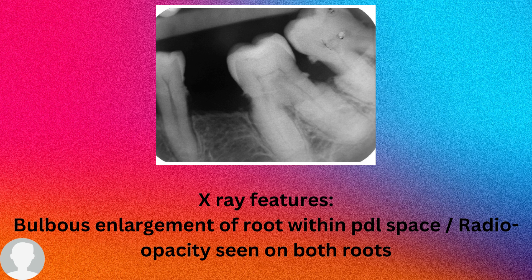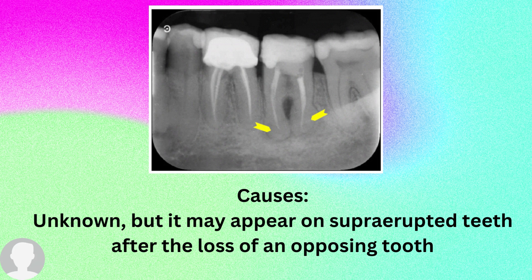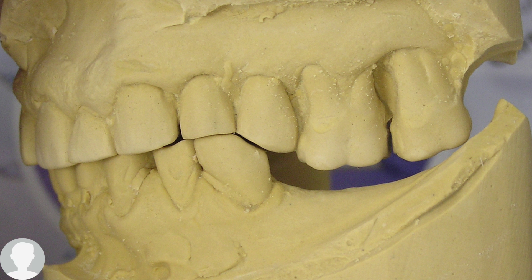Now, what are the causes? The cause is unknown, but in some cases it may appear on supra-erupted teeth after the loss of an opposing tooth. As you can see in the picture, teeth numbers 26 and 27 are supra-erupted because there are no opposing teeth — there is free space in the opposing dentition. In such supra-erupted teeth, an X-ray may reveal hypercementosis or cemental hyperplasia.